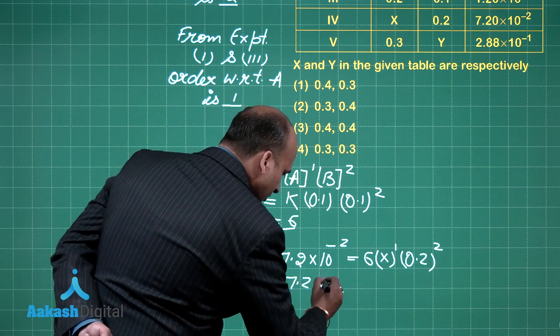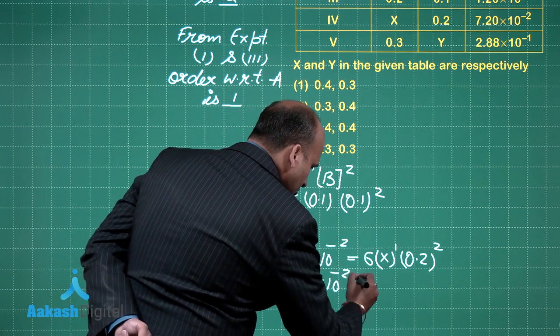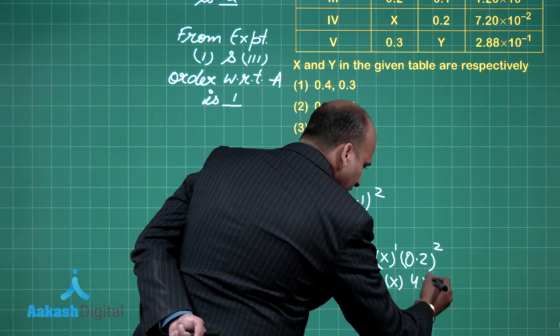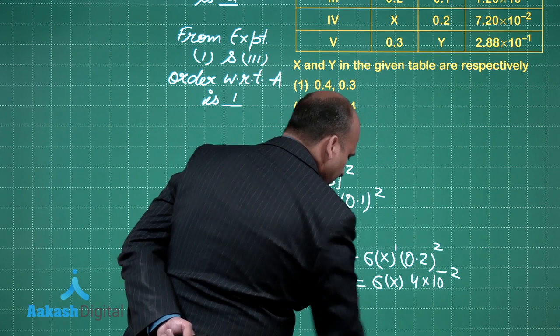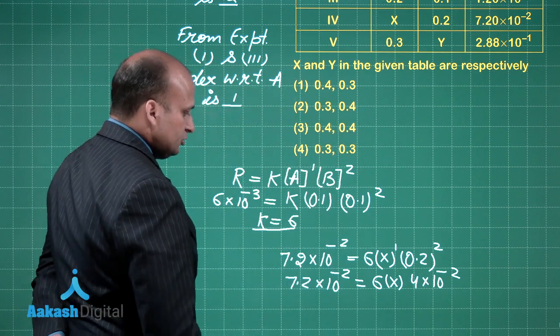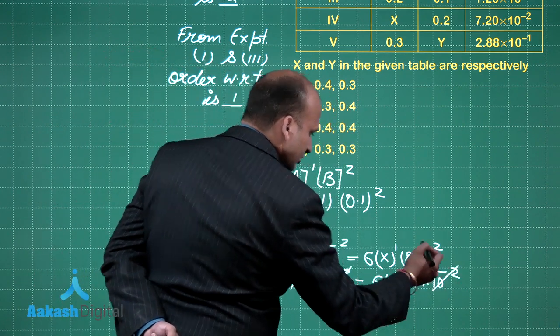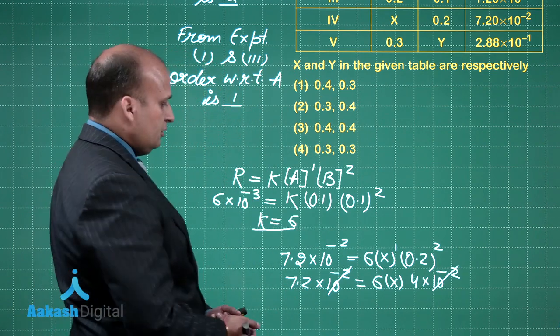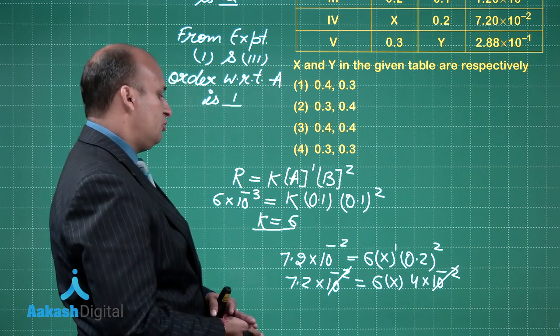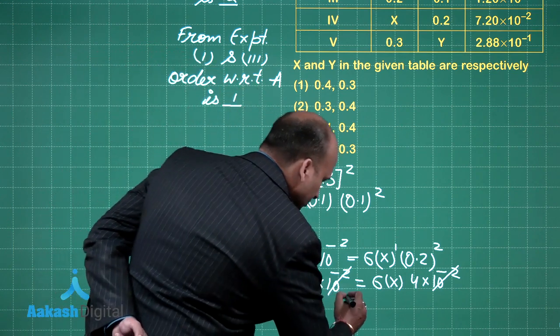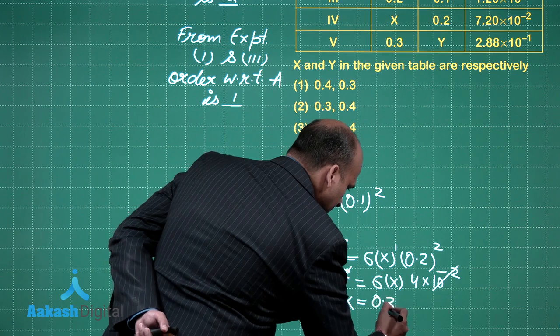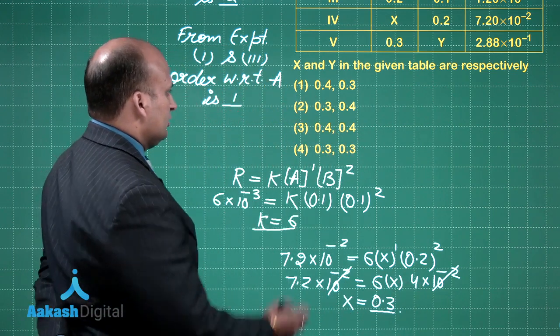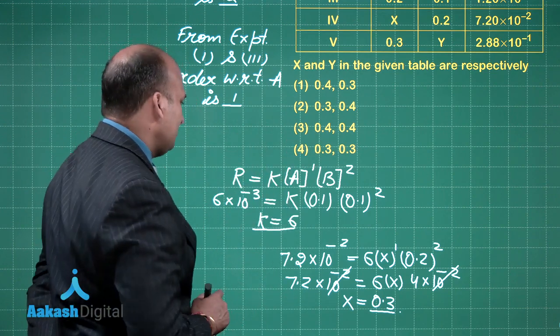This is 7.2 into 10 raised to power minus 2. This is 6X and then 4 into 10 raised to power minus 2. So this 10 raised to power minus 2 gets canceled out. It is like 7.2 divided by 24. So the value will come out to be 0.3. The value of X is 0.3. So there are 2 options, 2 and 4. We need to work out still more.